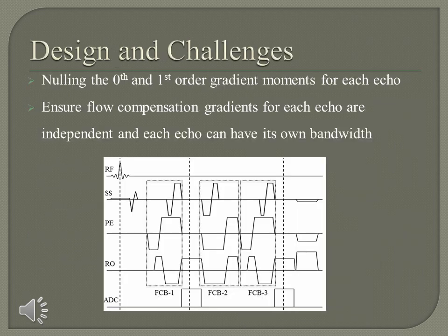This is the sequence diagram for our fully flow compensated double echo sequence. The zeroth and first-order gradient moments for each echo are zero, and the flow compensation gradients for each echo are independent. The gradients required for this process can be demanding and limit the potential echo times. Nevertheless, we are able to image with echo times as short as 7.5 ms and a second echo time as short as 17.5 ms, which are good choices for studying strokes and microbleeds.